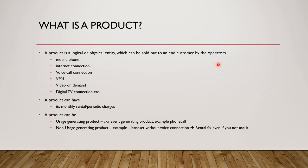There are two things: products and services. These terms are used interchangeably by different organizations and operators. A product is basically a logical or physical entity that can be sold by an operator to an end customer. For example, at an operator store you might buy a mobile phone, a SIM card, and services like voice or data. Products include mobile phones, internet connections, voice calls, VPN, video on demand, and digital TV. Some are physical products; some are virtual — like a voice call connection, which you can't see but exists inside your SIM card.